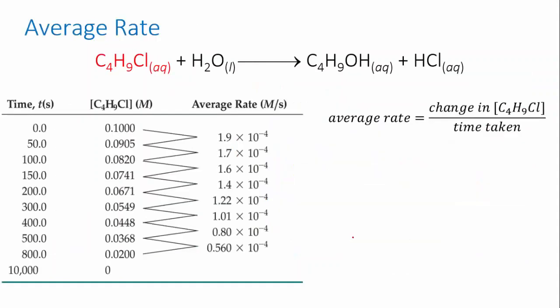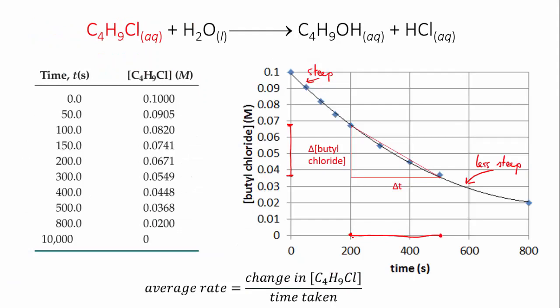Graphing rate data is useful because you get a quick visual idea of how the rate varies through the reaction. You can also plot data sets from different experiments and visually compare which ones are faster or slower.